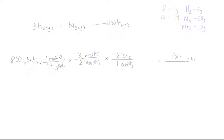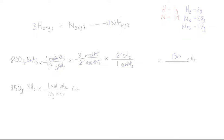What if the question asked how much nitrogen gas was used? Let's do that. We still start with 850 grams of ammonia NH₃, and convert to moles of ammonia using the molar mass: 17 grams NH₃ per 1 mole of NH₃.